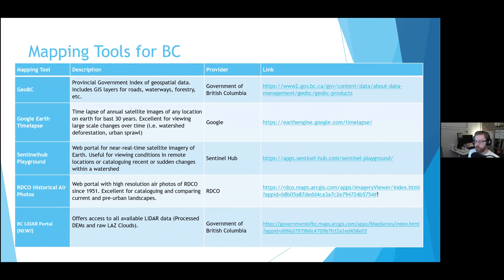Here is a table from the toolkit listing specific mapping tools relevant in BC. First off, there's GOBC — a public portal where the BC provincial government shares all their geospatial data. You can go there and access pretty much anything: roads, waterways, forestry, range, recreation — all very important from a source protection perspective. All that data is publicly available; anyone can download it if they've got the software to open the files, and there is open source GIS software that will open it — all free.